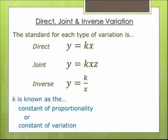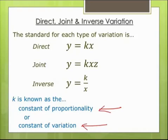We're going to talk about three different kinds of variation. First we'll talk about direct, and then we'll talk about joint and inverse variation. K is known as the constant of proportionality or the constant of variation. You have to know both of them because the SOL will use either one.